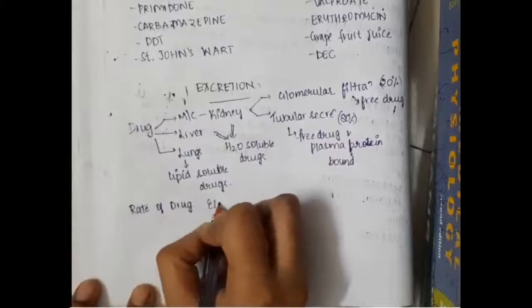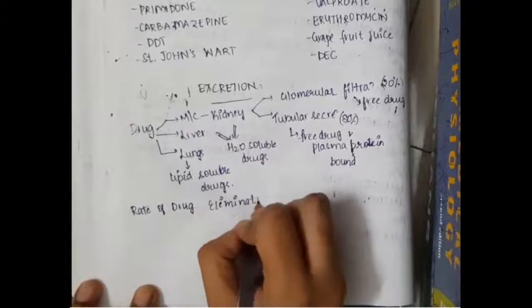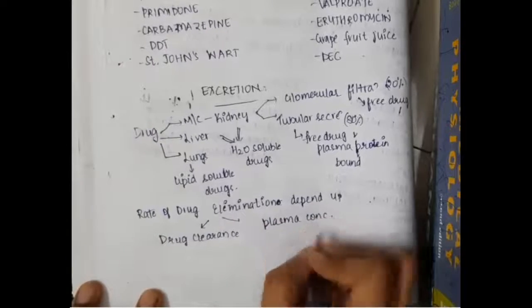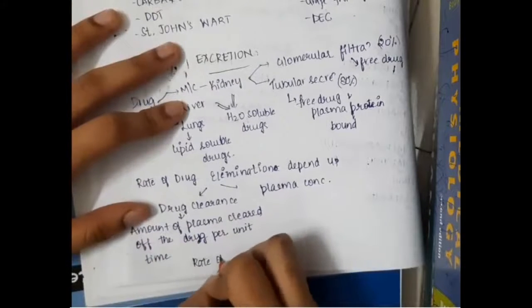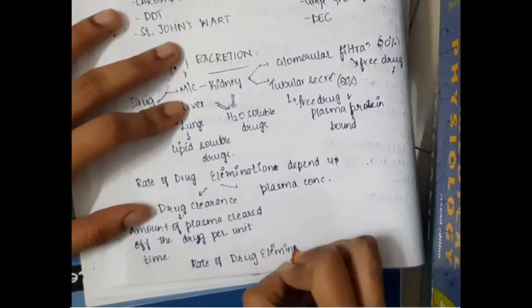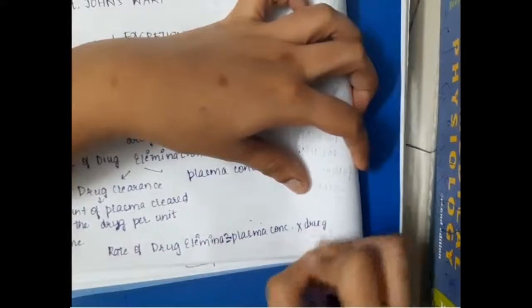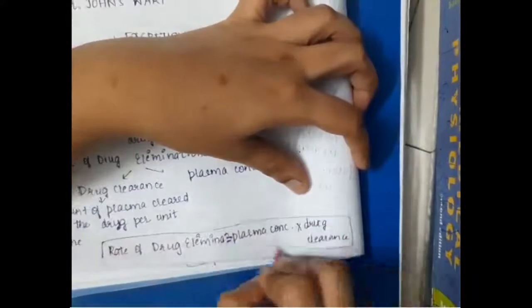An important concept is the rate of drug elimination, which mainly depends upon drug clearance and plasma concentration. Drug clearance refers to the amount of plasma cleared of the drug per unit time. The rate of drug elimination is equal to plasma concentration multiplied by drug clearance.